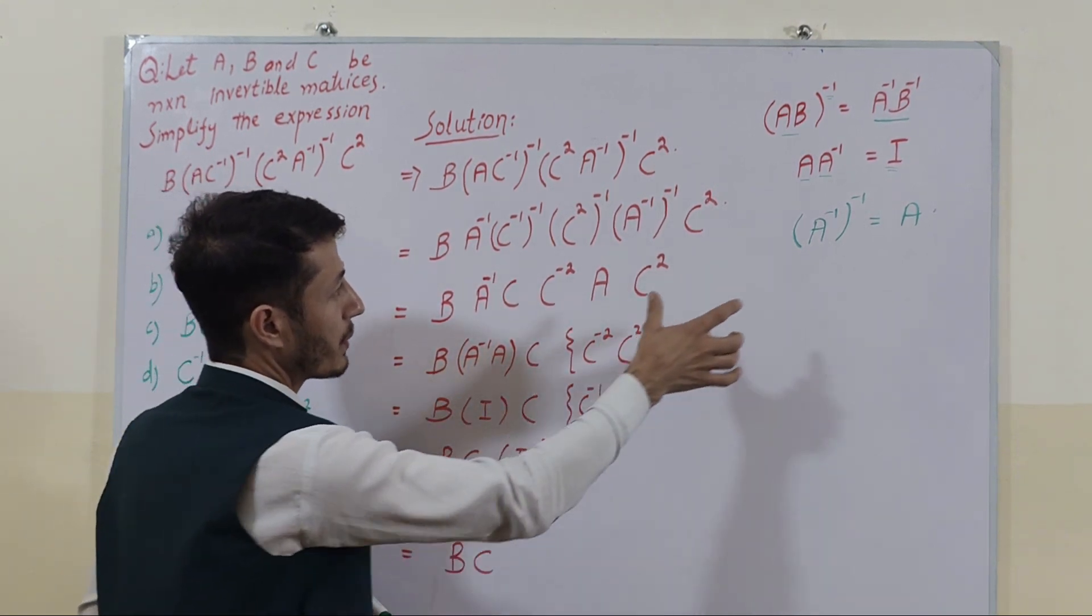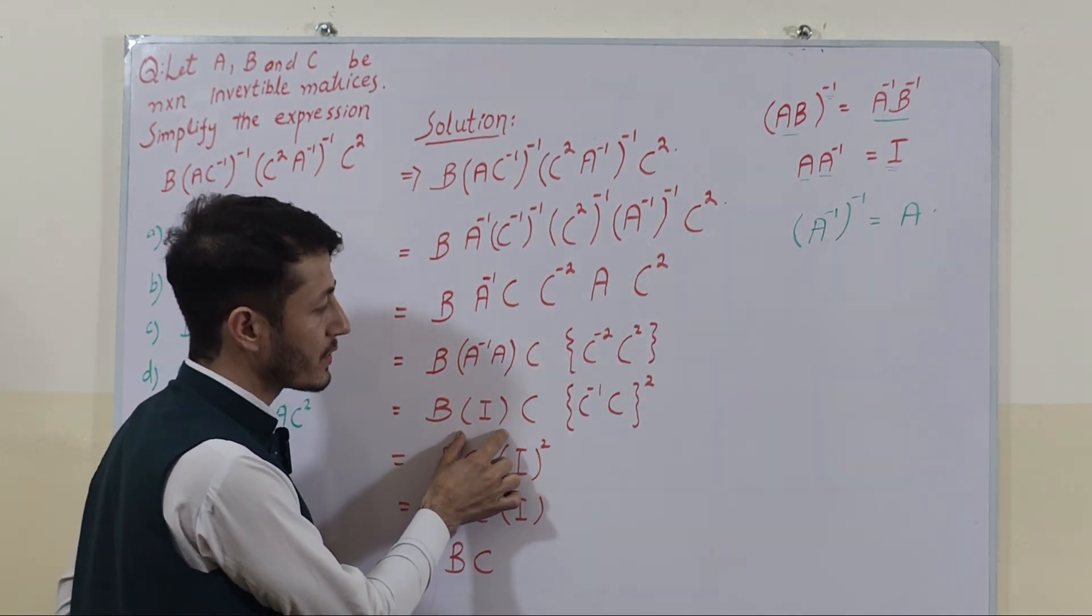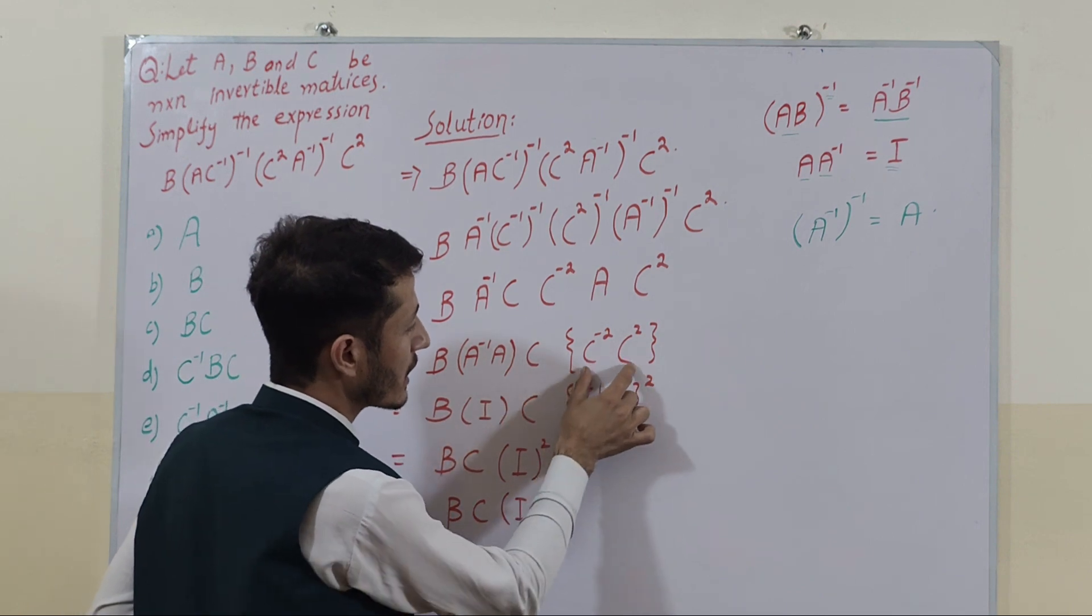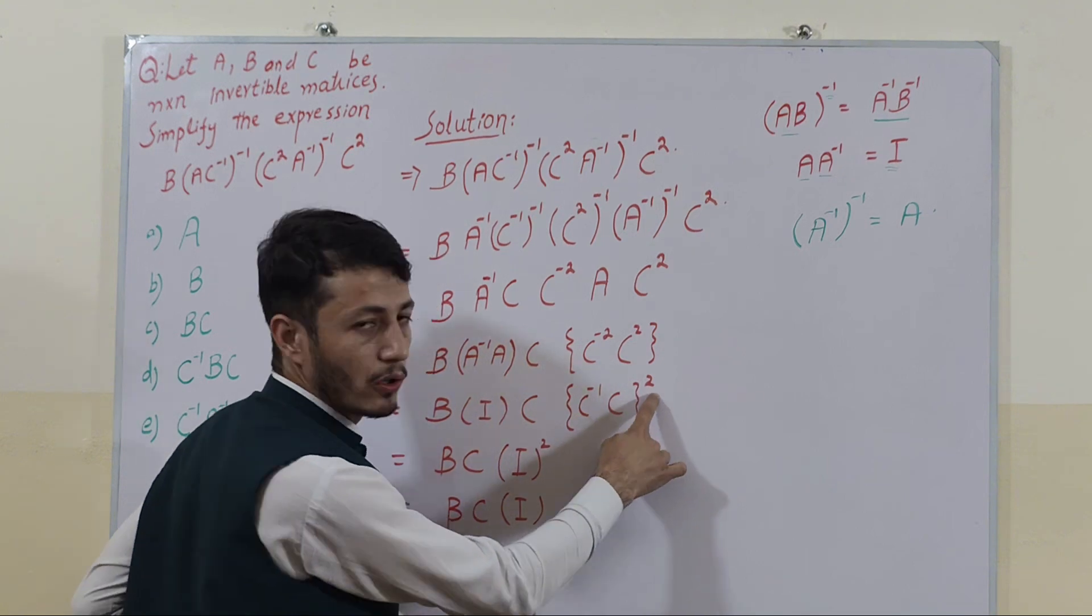Again from the property, this A inverse into A is equal to the identity matrix. And again here we can write it as C inverse multiplied by C matrix whole power 2.